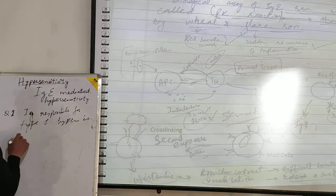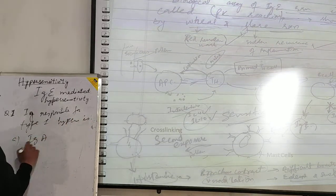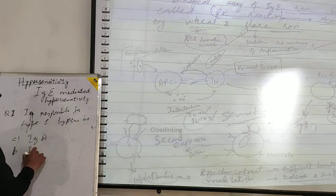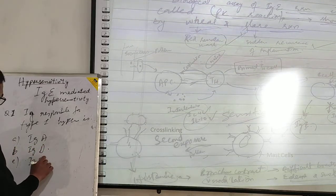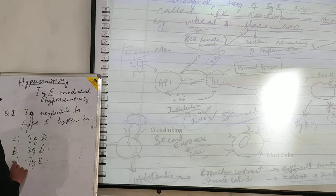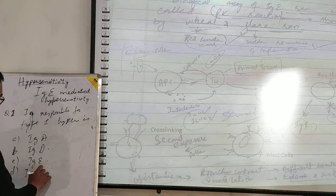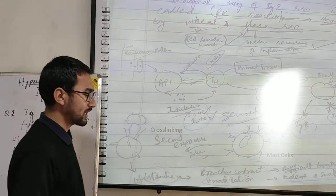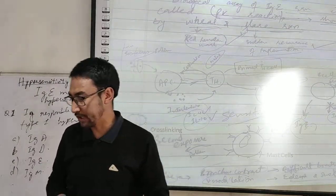The options could be: A — IgA, B — IgD, C — IgE, and D — IgM. The correct answer is IgE. This is how objective-type questions could be asked from today's topic. You have to be very well versed with the subject.